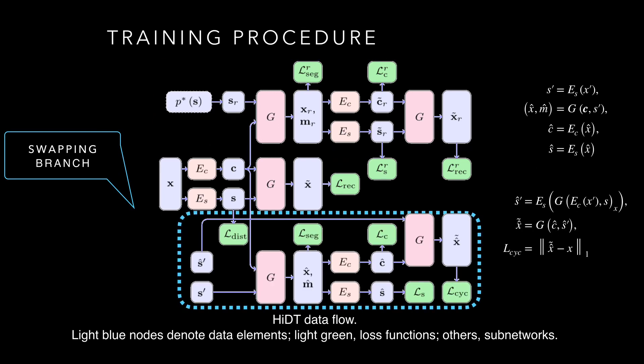In the swapping branch, two real images exchange their extracted styles with each other. We apply the swapping twice to introduce a cross-cycle consistency constraint. The cross-cycle consistency loss function intends to reconstruct the original image after being transferred twice. Other losses are similar to the noise branch, excluding the style reconstruction criterion.